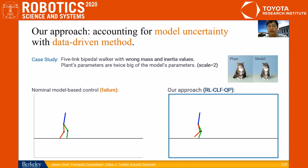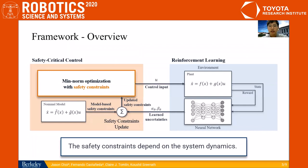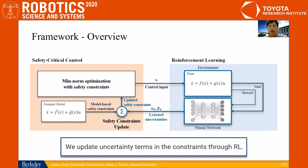This is the framework of our work. It consists of a min-norm optimization problem that is solved online, which includes stability and safety constraints. But these constraints depend on the dynamics of the system. That is why we need to learn the model uncertainty terms and use them to create estimates of true stability and safety constraints.